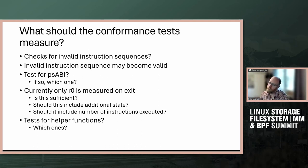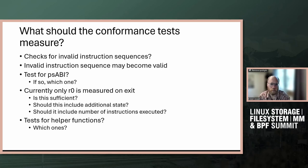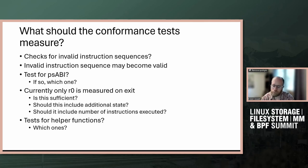On the question of whether only measuring R0 on exit is sufficient — right now, from what I've looked at in the tests, yes, it's sufficient, because anything else you can write code to handle and set R0 appropriately. So it's a decent workaround, and other things would be higher priority than measuring anything other than R0.